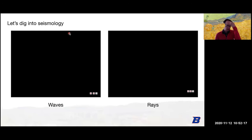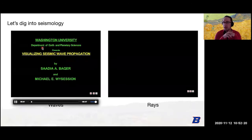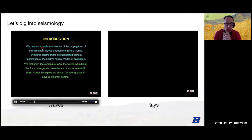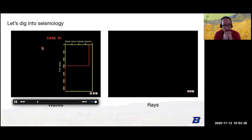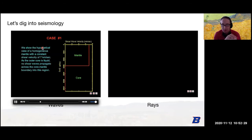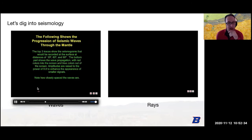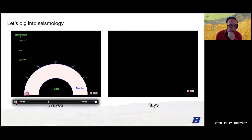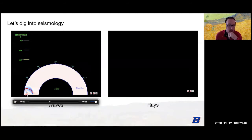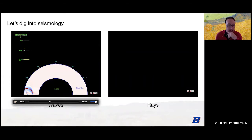Let's dig into seismology. There are two ways we think about waves. The first uses super old-school videos. We think about waves and wave fronts. Here's an example: here is the earth in a 2D view — half the earth with the core and mantle. We shot off an earthquake underground and we're watching the waves propagate. At 30, 60, and 90 degrees we're watching how the surface of the earth is moving.